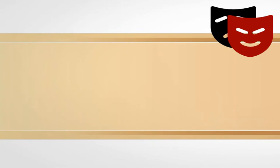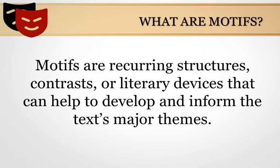After discussing the two main themes in Dr. Faustus, I will move on to motives. Before knowing the main motives in Dr. Faustus, we should know what motives actually are. Motives are recurring structures, contrasts, or literary devices that can help to develop and inform the text's major theme. A motive is a recurring narrative element with symbolic significance. If you spot a symbol, concept, or plot structure that surfaces repeatedly in the text, you are probably dealing with a motive. They must be related to the central idea of the work and they always end up reinforcing the author's overall message.